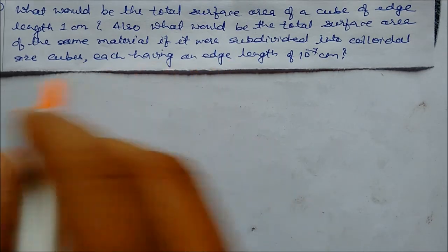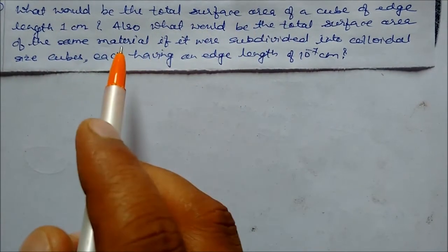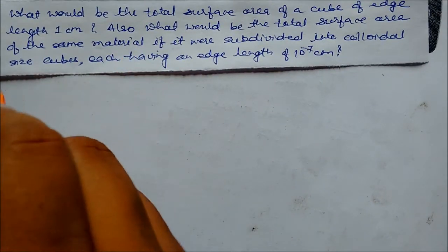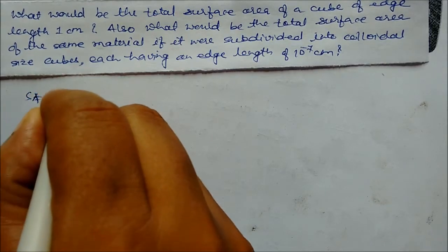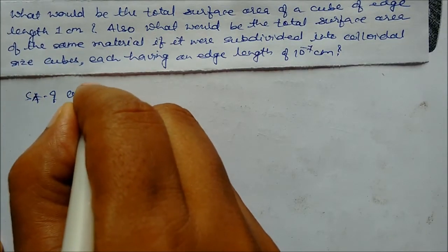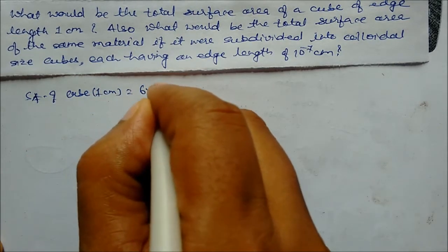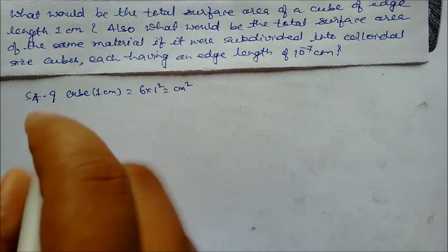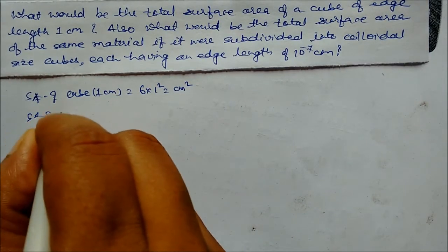So here two questions: one is for the original cube, and this cube has been divided into a smaller cube, so we have to find the surface area. First we find the surface area of the original cube, where edge length is 1 cm. So we get 6 into 1 squared, which gives us 6 cm squared.